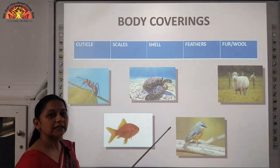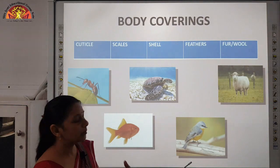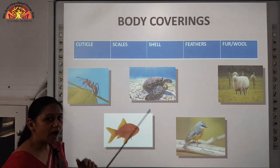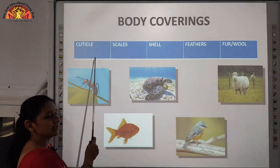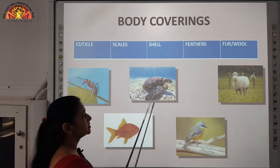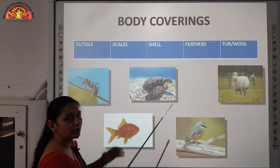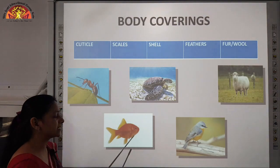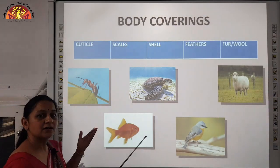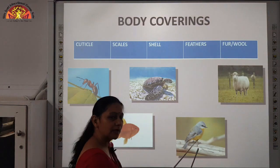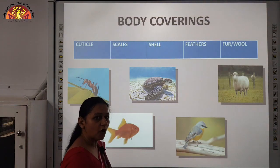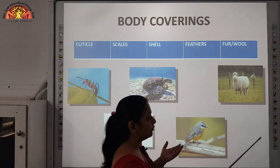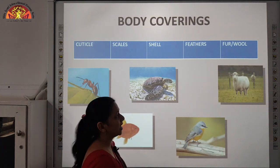Body coverings: different animals have different types of body coverings which protect them. Animals like grasshopper and ants have a hard body covering called cuticle. Animals like turtle and snails have a hard body covering called shell. Scales are present in the bodies of fish and crocodiles. Feathers protect birds, keep them warm and help them to fly. Animals like sheep and bear have fur or wool — sheep have wool and bears have fur.